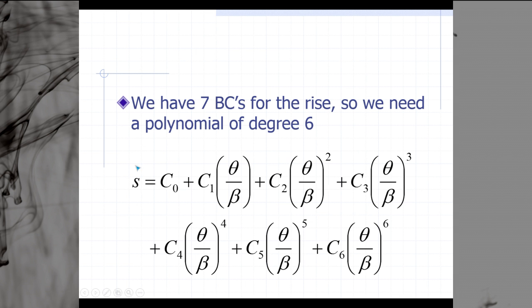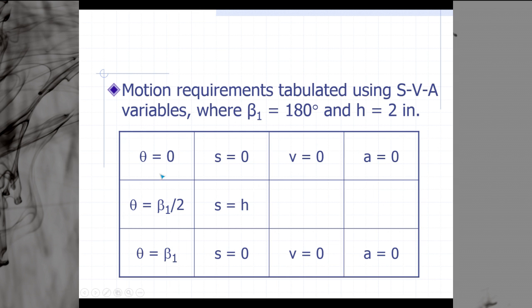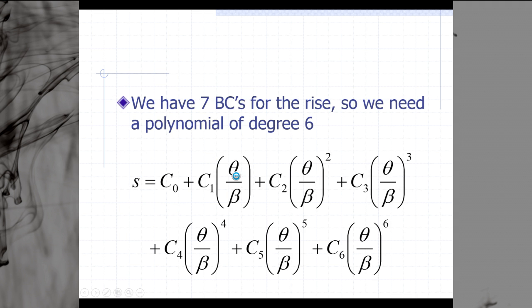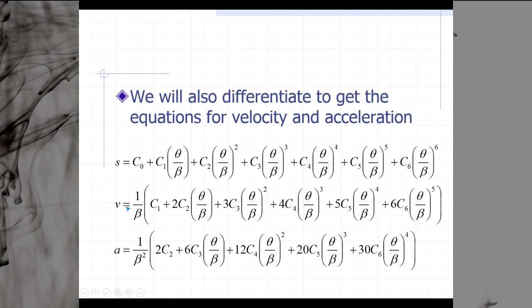We found our first constant, c0 is equal to 0. We do the same with our velocity expression. When theta is equal to 0, our velocity should also be equal to 0. When we go to our velocity equation, we plug in 0 for v, we plug in 0 for each of our thetas, and what we find is that 0 is equal to 1 over beta times c1. If we multiply our beta across, we see that c1 is equal to 0. So far we found two constants: c0 and c1 are both equal to 0.